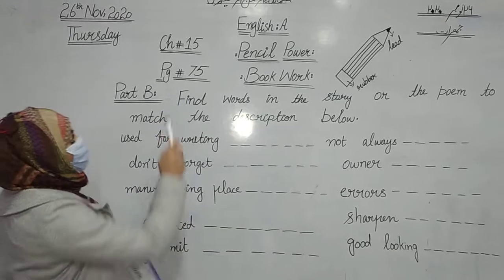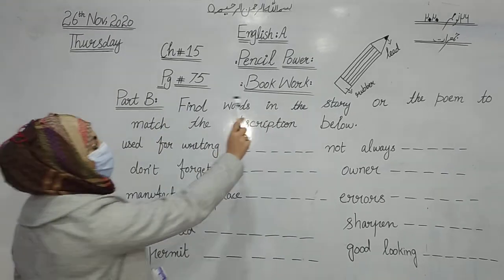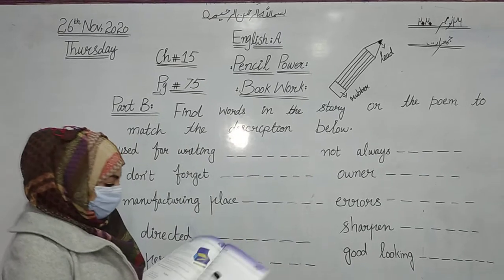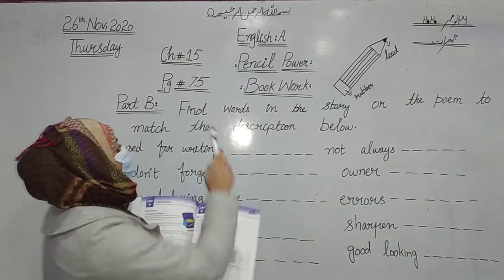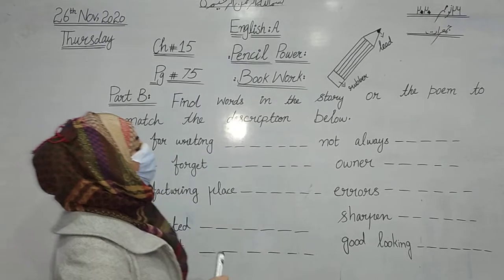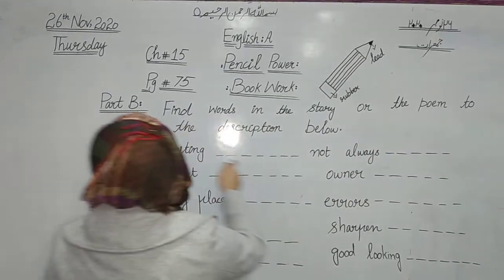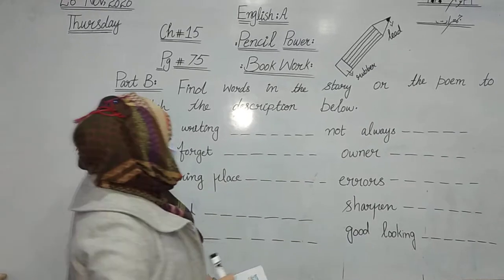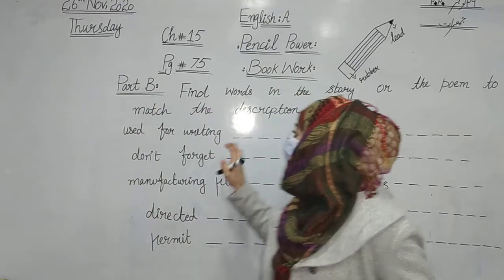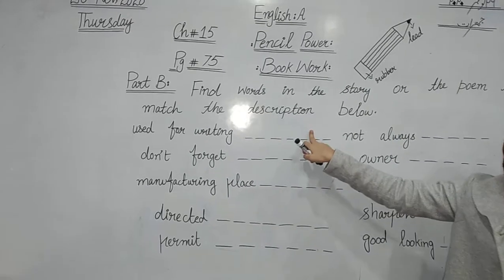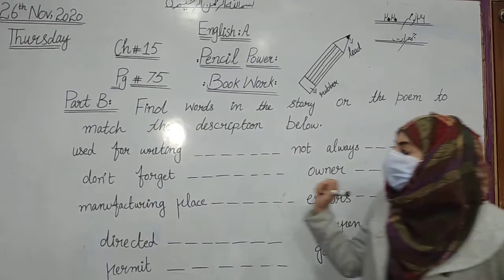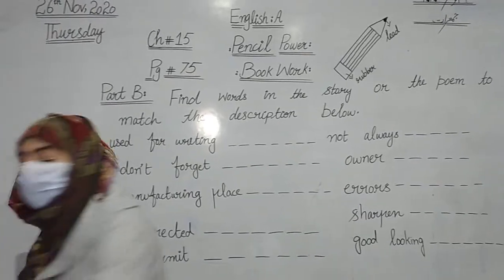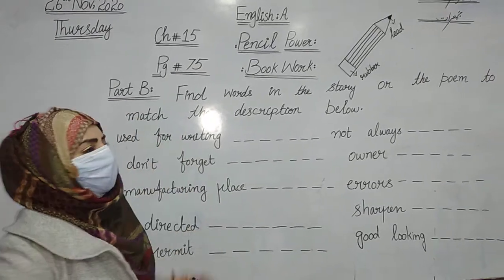Today we are going to do page number 75, book work, Part B. Part B on your book says: find words in the story to match the description below. In this part, you write words in the blanks and then choose from the story.